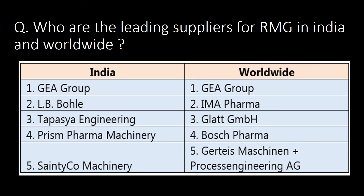Who are the leading suppliers for RMG in India and worldwide? Giagroup, Elbibol, Tapasai Engineering, Prism Pharma Machinery, and Senteco Machinery are leading suppliers from India, whereas Giagroup, Ema Pharma, Glatt, Bosch, and Jetis are the leading suppliers of RMG worldwide.